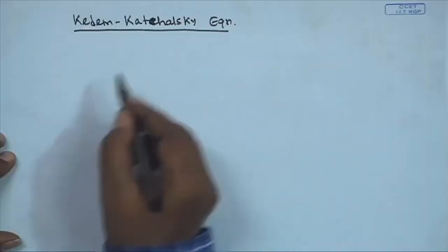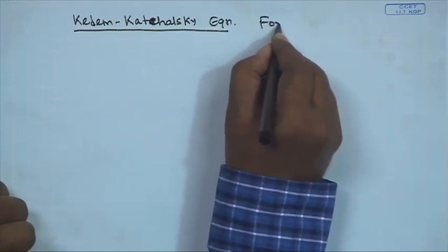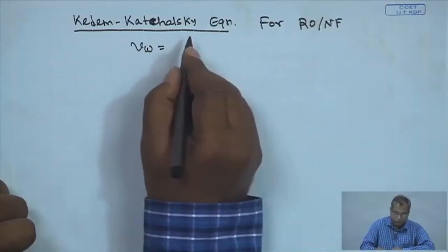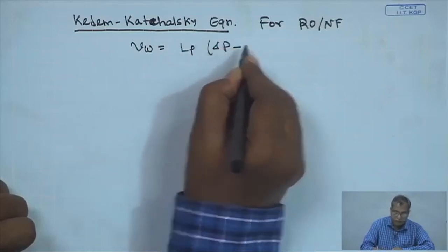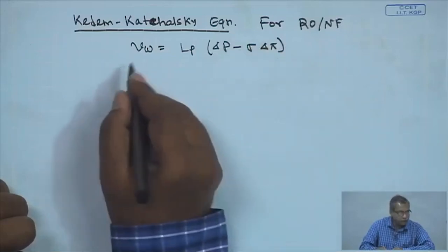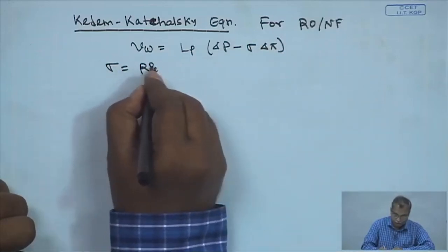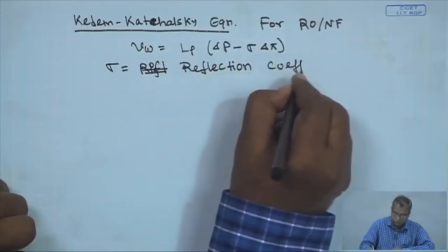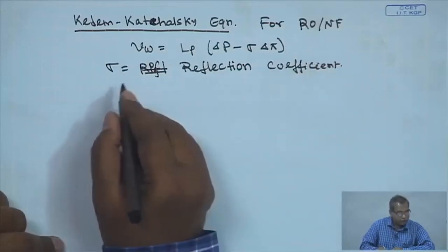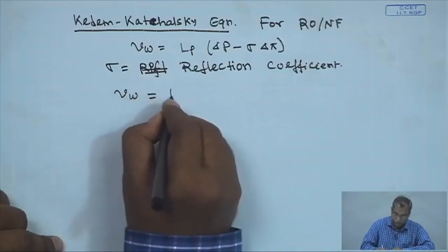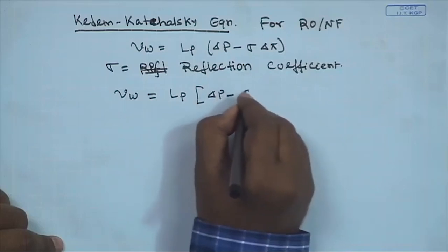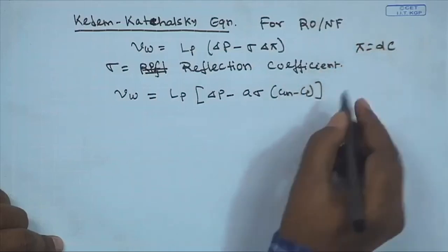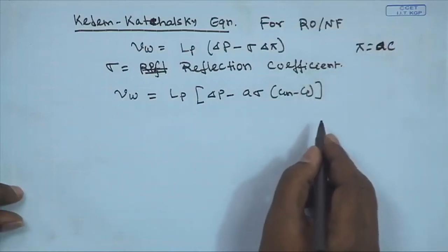We were looking into various variants of the solution diffusion model and how to include those in our calculations to get system performance. Next, the modification we will be looking into is the Kedem-Kechalski model for the RONF system — for reverse osmosis and nano filtration. In this case, the osmotic pressure model of Darcy's law is modified as L_p(ΔP − σΔπ), where σ is known as the reflection coefficient.